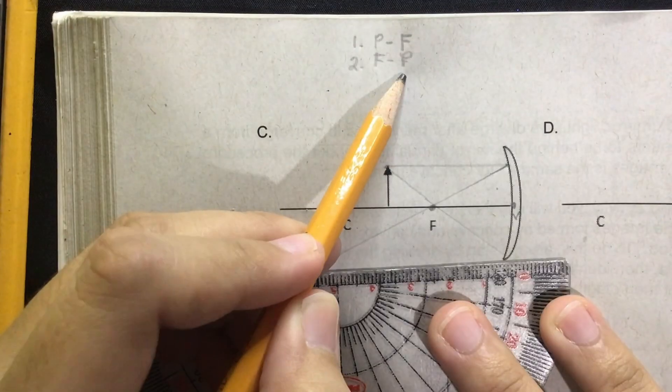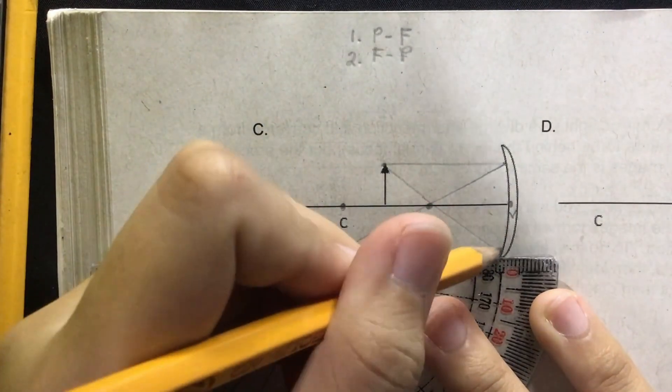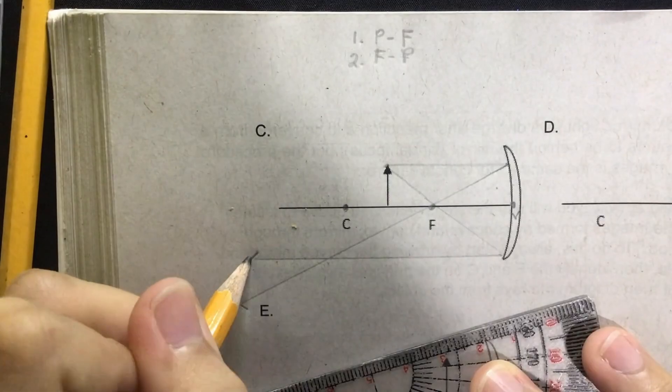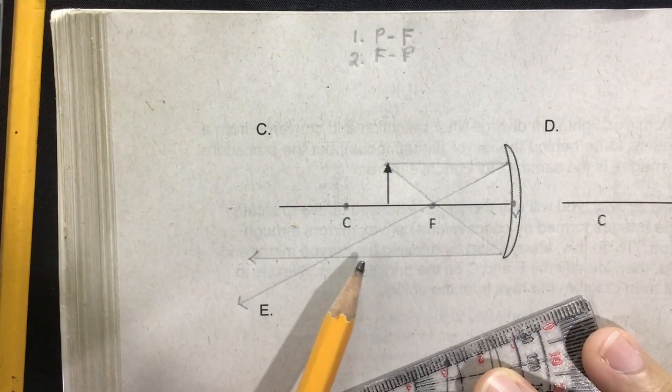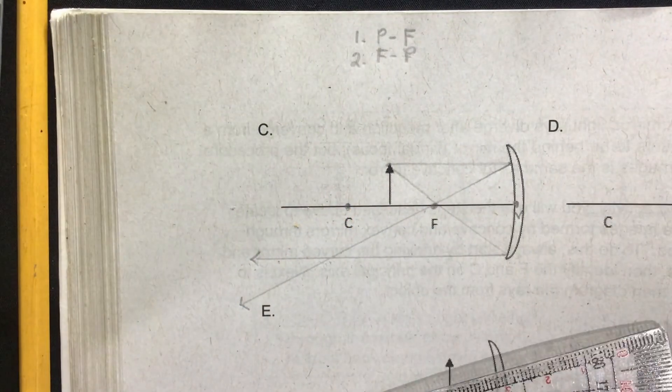P ray is a reflected ray that is parallel to the principal axis. So this is our P ray, so we have here FP ray. Do we have reflected rays that intersect at a specific point?